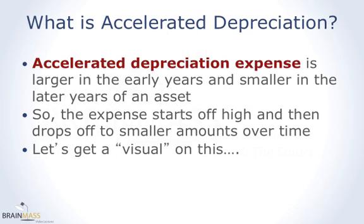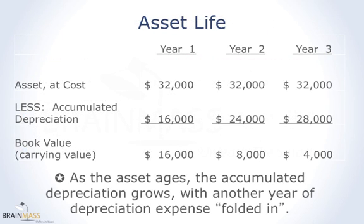Accelerated depreciation means that the depreciation expense is larger in the earlier years and smaller in the later years — the expense starts off high and drops to a smaller amount over time. Here's an asset that costs $32,000 being depreciated using an accelerated method, and you can see that the change from year to year gets smaller and smaller as the asset ages.